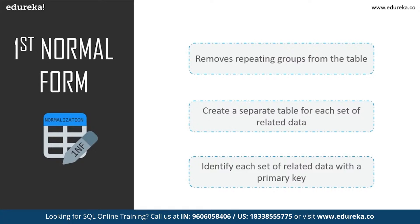In first normal form, we tackle the problem of atomicity. Atomicity means values in the table should not be further divided — in simple terms, a single cell cannot hold multiple values. If a table contains composite or multi-valued attributes, it violates the first normal form. First normal form removes repeating groups from the table, creates a separate table for each set of related data, and identifies each set of related data with a primary key.